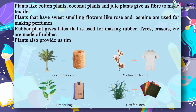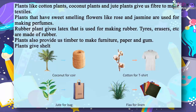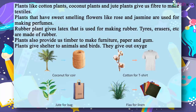Plants give shelter to animals and birds. They give out oxygen which cleans the air. Coconut for coir, cotton for t-shirts, jute for bags, flax for...